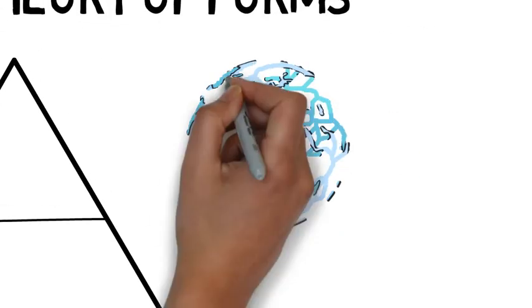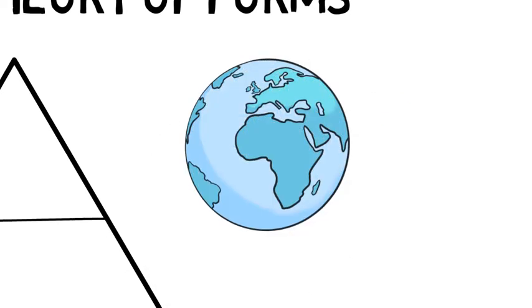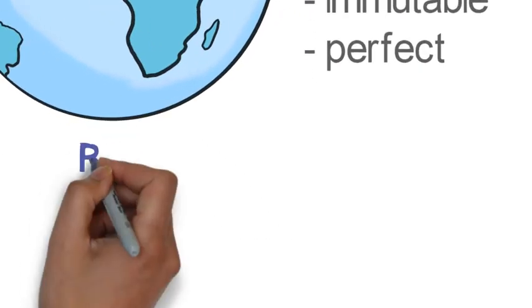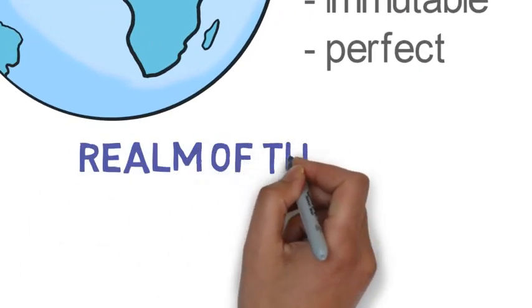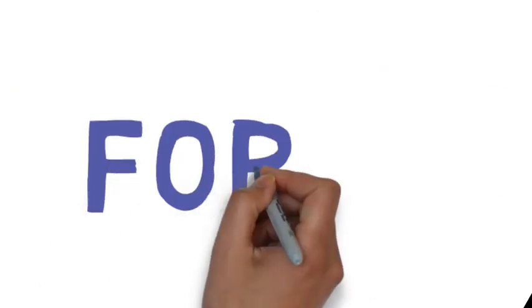So if you remember, Plato had argued for the existence of another realm, a perfect, eternal, immutable, and unchanging realm, and he called that realm the realm of the forms. He also postulated the existence of what he called forms.